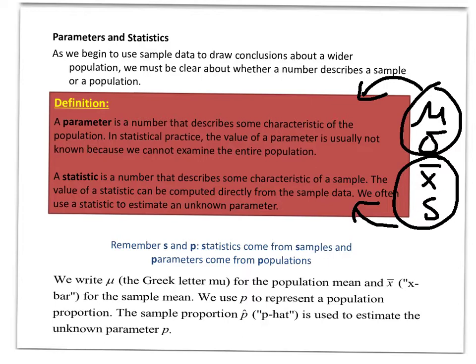These two symbols — x-bar and s — are used for the sample. Mu and sigma are used for the population. They mean the same thing: mean and standard deviation, just for different groups. Whenever I use the word 'statistic,' we're talking about numbers from the sample. Whenever I use the word 'parameter,' we're talking about numbers regarding the population. When talking about proportion, we use p to represent the population proportion and p-hat as our predicted proportion. In the chip example, all the samples you took were p-hats, and we used those to predict p, the population proportion. All those samples were centered around 0.22, so the average of those samples was our prediction — and it turned out to be very accurate, matching p. So p is the proportion for the whole population; p-hat is the proportion from the statistic.